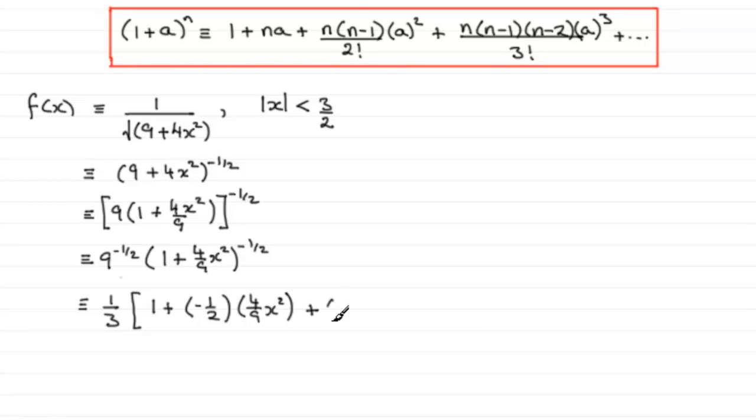And go on to the next term, and we've got n, which is -1/2, n-1, so we take 1 away from this, that's -1 and a half or -3/2. This is divided by 2 factorial; 2 factorial, remember, is 2 times 1, so I'm just going to write that as 2 times 1.